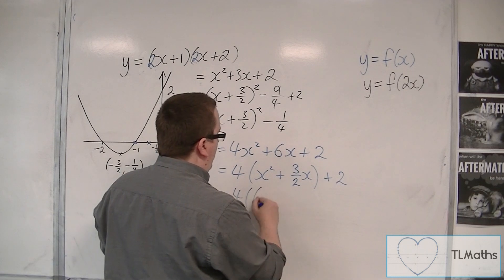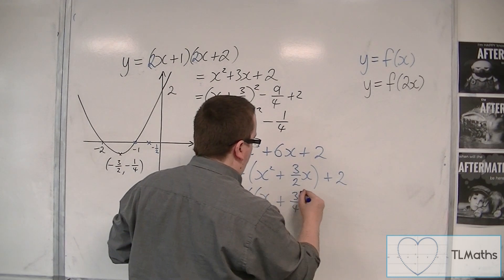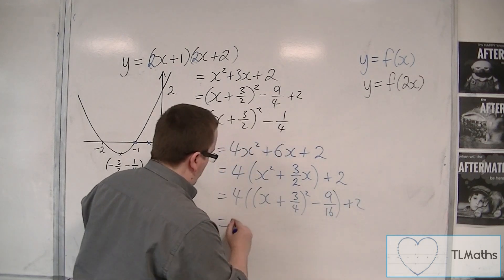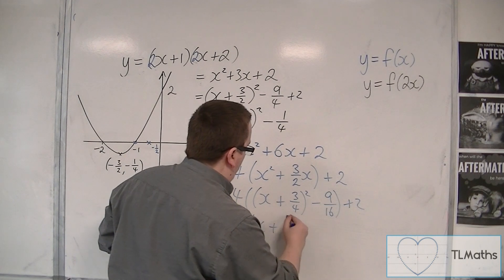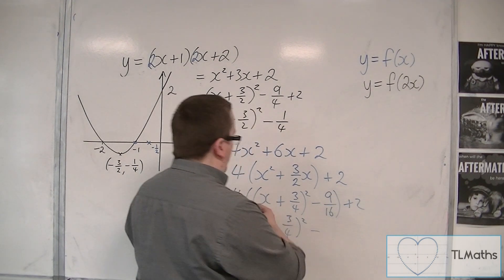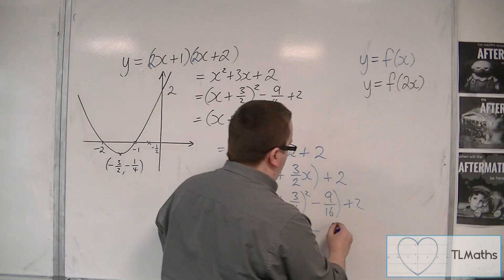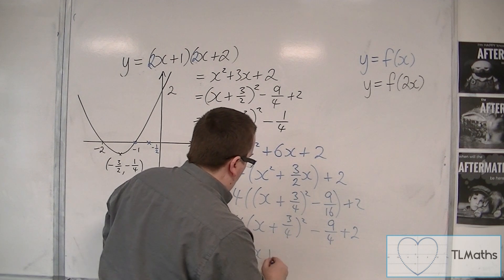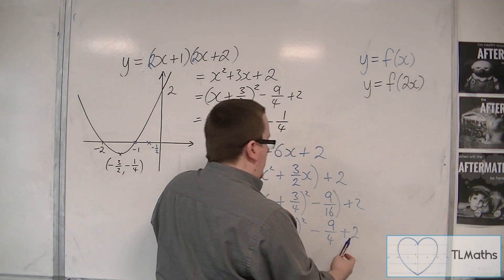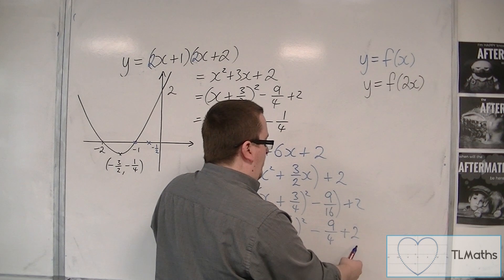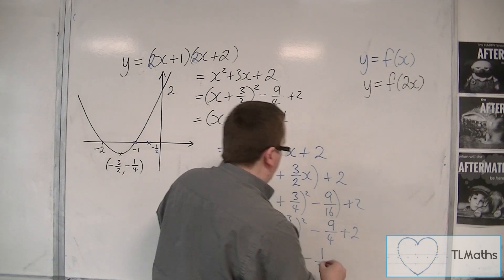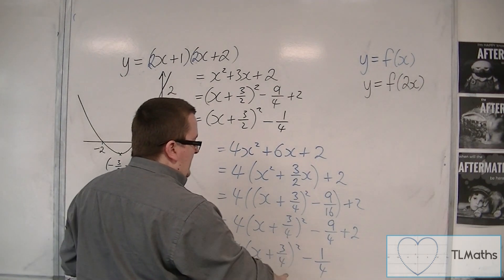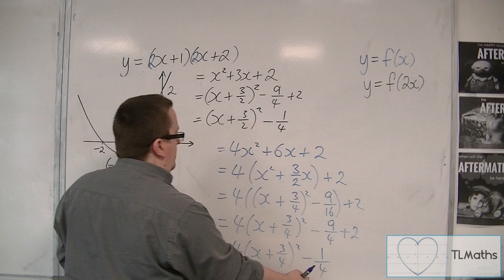Complete the square on what's inside the bracket, so x plus 3 quarters squared, take away 9 sixteenths plus 2. So that's 4 lots of x plus 3 quarters squared. 4 lots of 9 sixteenths is minus 9 quarters plus 2. So this is 4 lots of x plus 3 quarters squared, minus 9 quarters plus 8 quarters is minus 1 quarter. So the vertex of this parabola is at minus 3 quarters, minus 1 quarter.